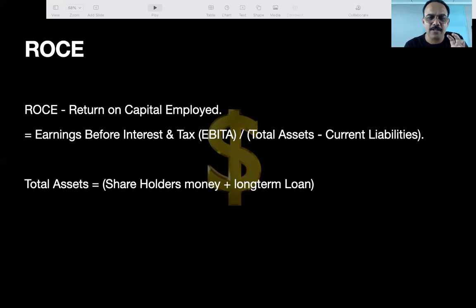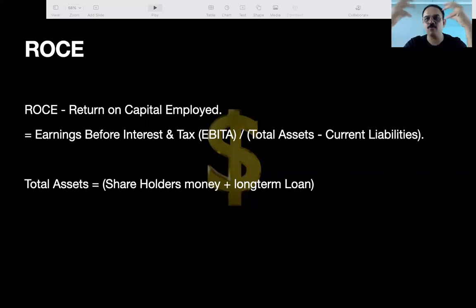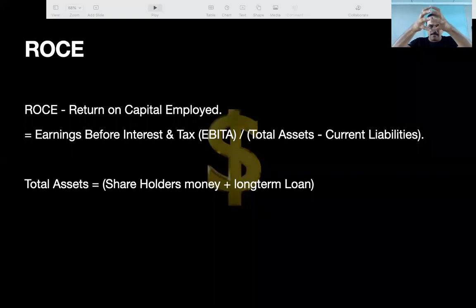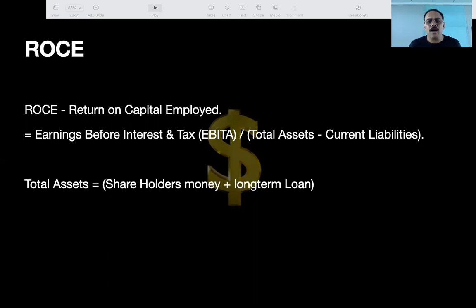Total asset is whatever money is brought in by the business owner. When you start a business, you bring in some money, then you take long-term loans from the bank. Whatever is put in by the shareholders plus whatever loan is taken from the bank — it's like buying an apartment. If the apartment is worth one crore, you bring in 20 lakh from your pocket and take a loan of 80 lakh from the bank.